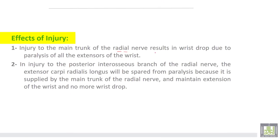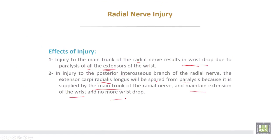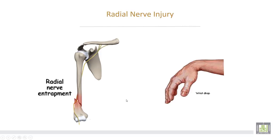Injury to the main trunk of the radial nerve results in wrist drop, due to paralysis of all extensors of the wrist. Injury of the posterior interosseous nerve only: the extensor carpi radialis longus will be spared from paralysis because it is supplied from the main trunk, and it can maintain extension of the wrist, so there is no wrist drop. This shows fracture of the shaft and injury of the radial nerve in the spiral groove, with the deformity of wrist drop.